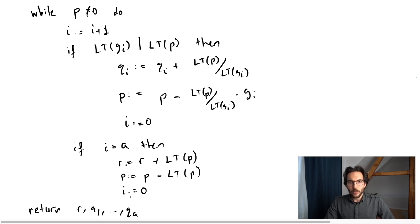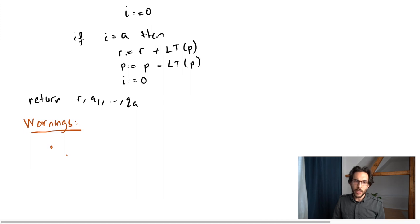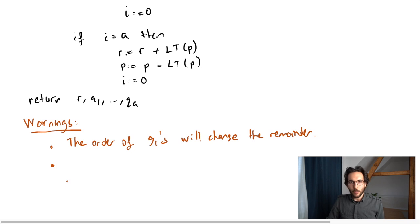I should end this section with a couple of warnings. The first thing is something we've essentially observed already at the very beginning of the lecture. If you change the order of the gis, then the remainder may also change. I'm not even mentioning the fact that monomial ordering will also change your remainder. Here is the really problematic part: the remainder can be non-zero even when f belongs to the ideal generated by g1 through ga.